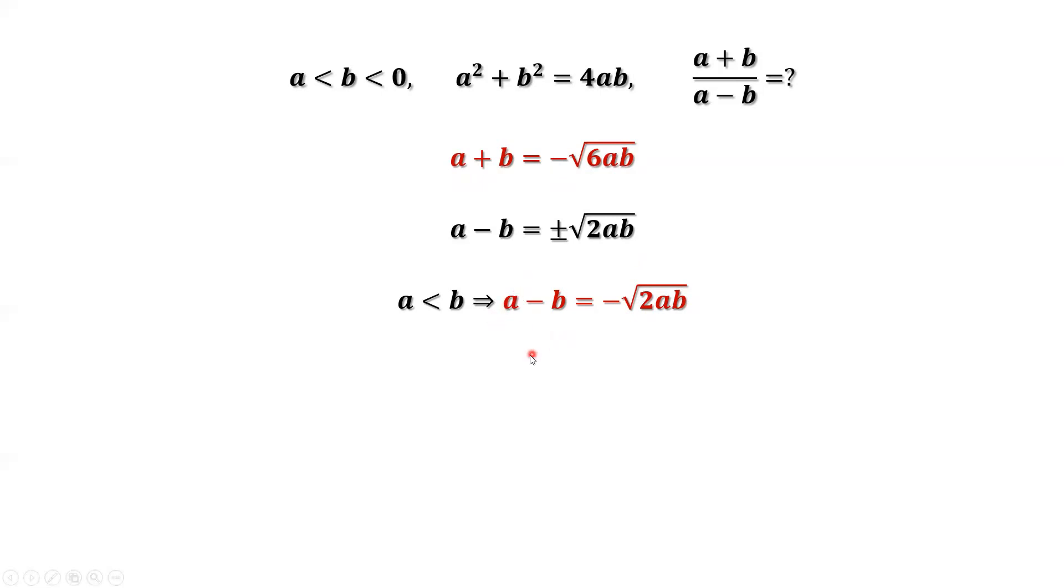We can plug in this expression to derive the final answer. A plus b over a minus b equals negative square root of 6ab over negative square root of 2ab. Simplify. We have the final answer, square root of 3. That's all. Thanks for watching and see you next time.